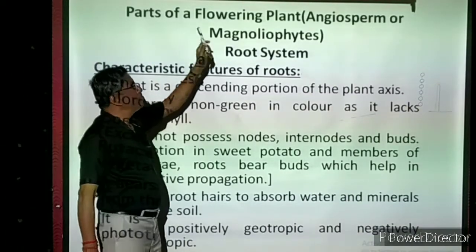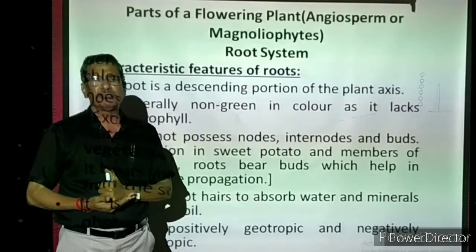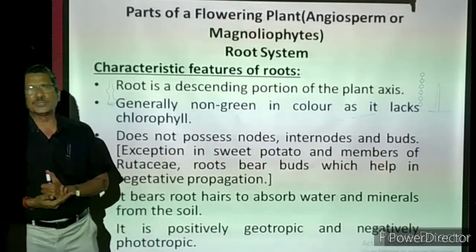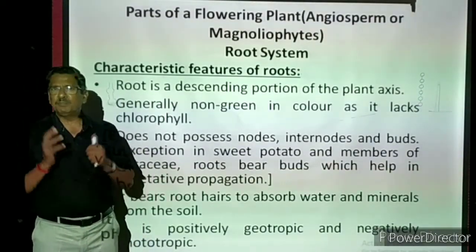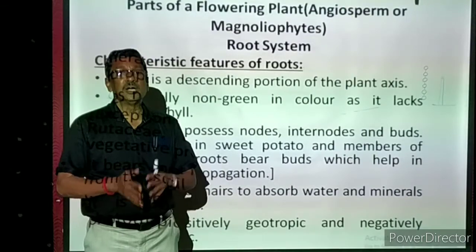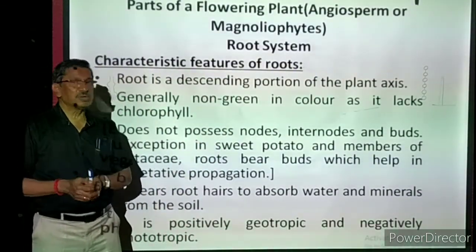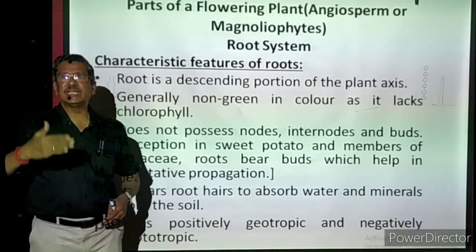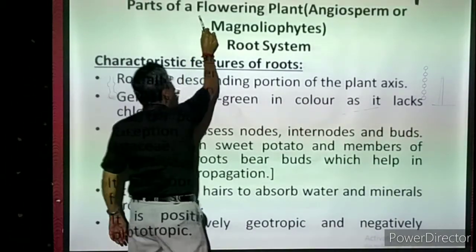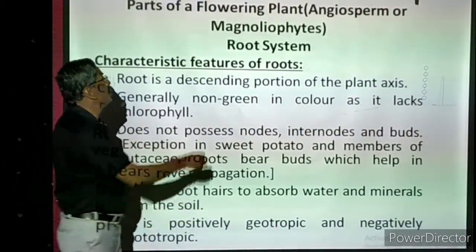Now, parts of a flowering plant. We are seeing so many varieties of plants in our surroundings. Do they all produce flowers? No — majority produce flowers, fruits, and seeds, but some plants are not producing any flowers. So we can classify plants into two groups: non-flowering plants, which do not produce any flowers in their lifetime, and flowering plants, which produce flowers according to their season. We are going to take only flowering plants — they are considered the advanced group of plants.